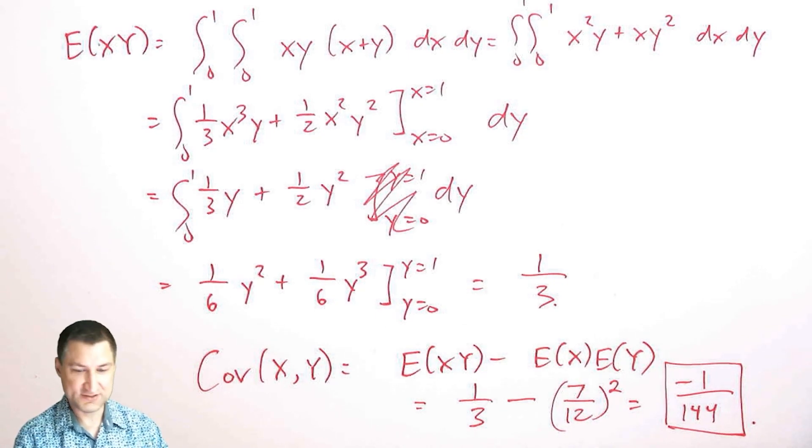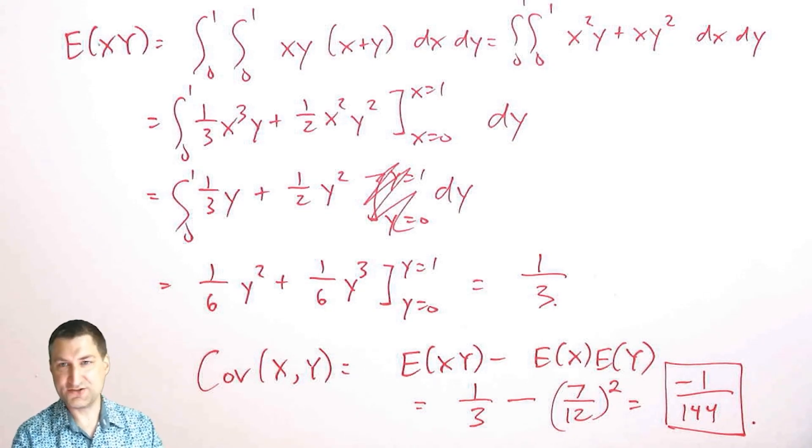Unlike the regular variance, there's no rule that says this has to be positive. And we're going to talk in the next lesson about how do I interpret this in some useful way. It actually makes more sense to scale this according to the variances of X and Y, and that's what we're going to do in the very next lesson. So I'll see you there.